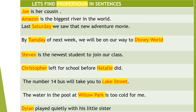Now let's find the proper noun in sentences. Joe is her cousin — Joe is the proper noun. Amazon is the biggest river in the world — Amazon is the proper noun. Last Saturday, we saw that new adventure movie — Saturday is the proper noun. By Tuesday or next week, we will be on our way to Disney World — Tuesday and Disney World are both proper nouns.